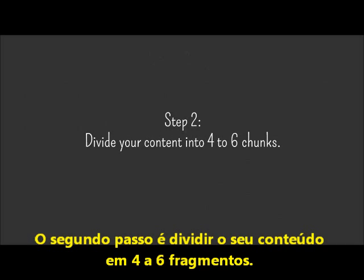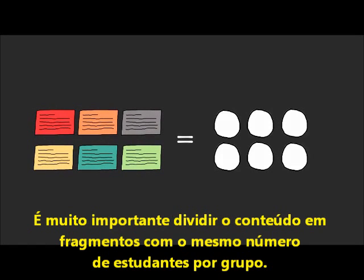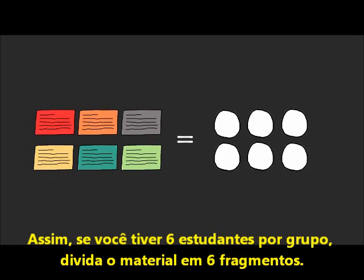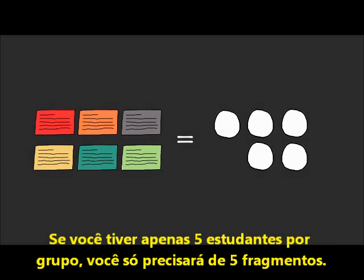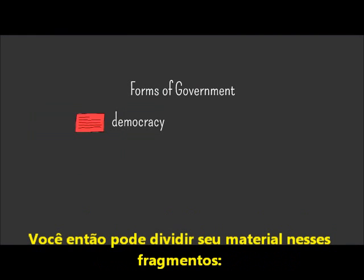Step 2: divide your content into 4 to 6 chunks. It's important to divide the content into the same number of chunks as the number of students in each group. So if you have 6 students per group, break your content into 6 chunks. If you're only going to have 5 students in each group, then you'll only need 5 chunks. Suppose you're a history teacher doing an overview of different types of government — you could divide your content into these chunks.